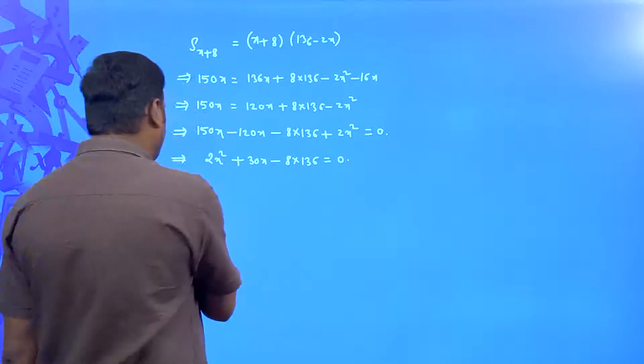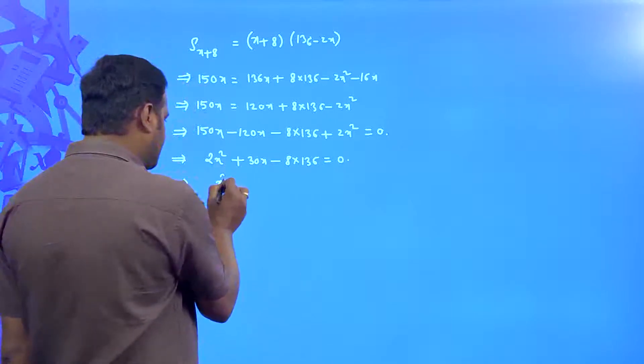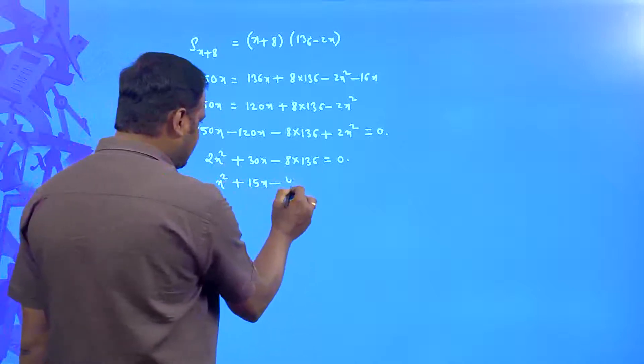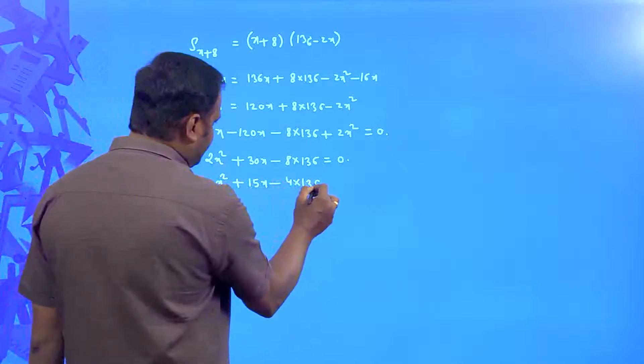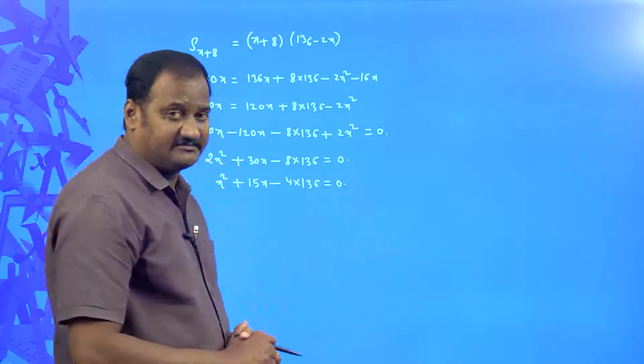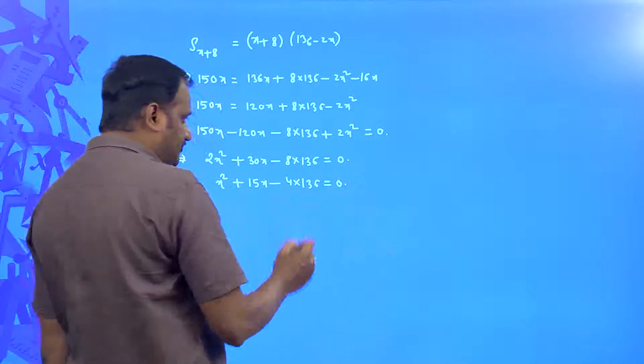That is why you can take one 2 common and then cancel it out. 2 into x square plus 2 into 15x minus 2, 4 into 136 is equal to 0. See here you can solve this by splitting middle term method, 4 into 136.